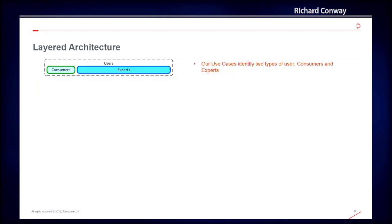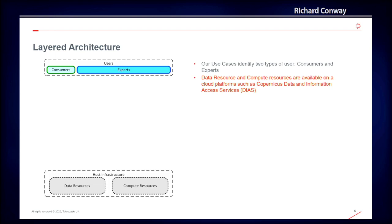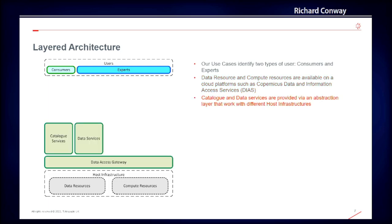We identify two kinds of user: experts who perform analysis and create added-value resources, and consumers of those resources. We consider the platform as a series of layers. The resource tier represents the hosting infrastructure and provides the EO data, storage, and compute upon which the exploitation platform is deployed.